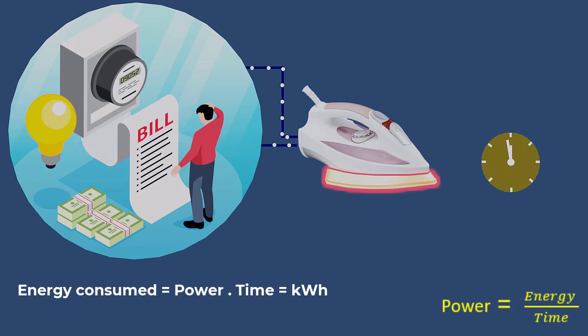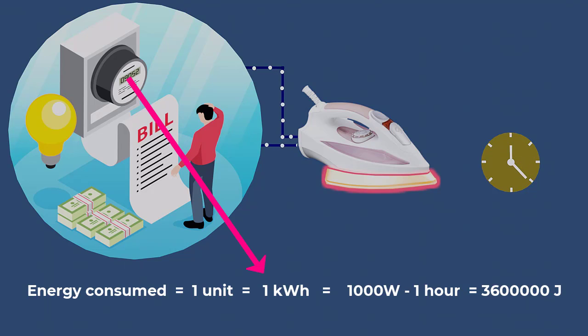Your electricity bill is based on the total energy consumption, measured in kilowatt hours. One kilowatt hour is equal to 1000 watt hours. So a device that consumes 1000 watts for one hour will use one kilowatt hour of energy or one unit of electricity in your bill.